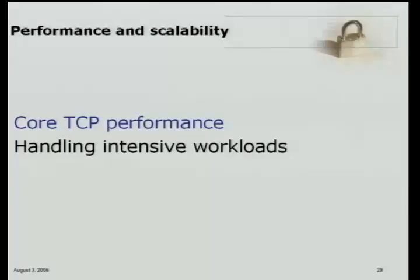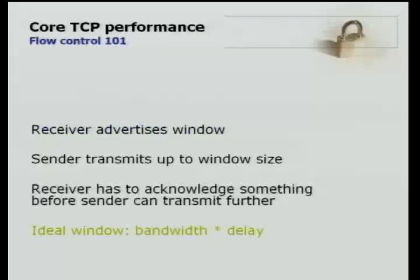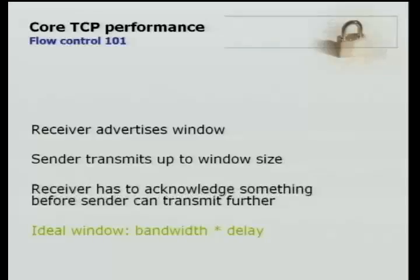Now I'll switch gears completely and talk about how we approached the challenges around TCP performance and handling intensive workloads. A lot of our work and thinking went into this area. For core TCP performance, to understand some of the things that we've done, it's useful to know about flow control. There are two algorithms that determine TCP performance. The first is flow control, which runs on the receiver and is used to manage the flow of packets from the sender to the receiver. The second is congestion control, which runs on the sender and is used to make sure the network doesn't get overloaded by a particular TCP connection.